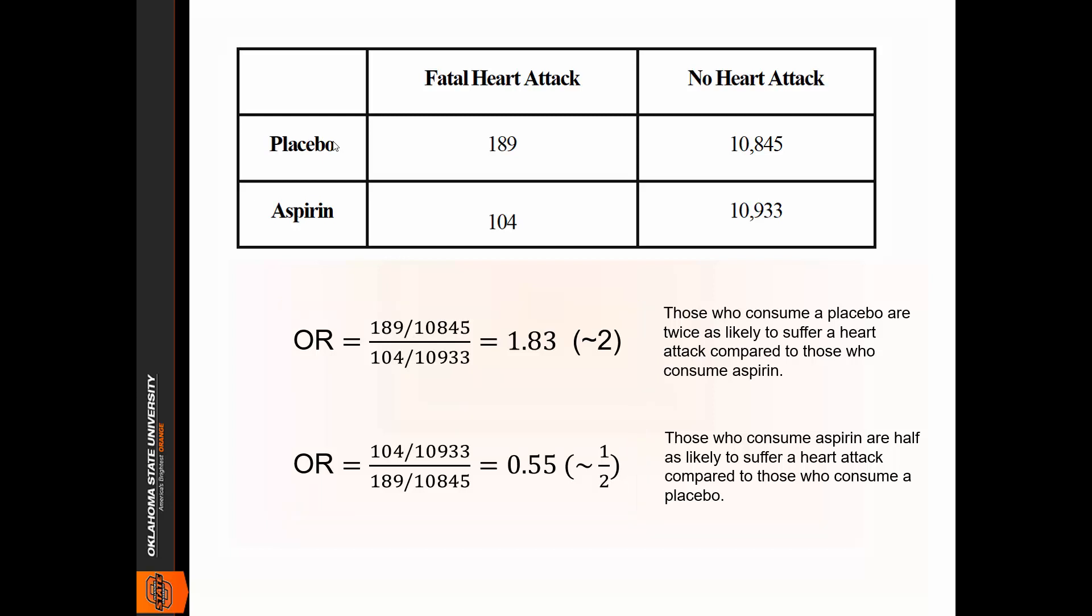One thing to keep in mind is that most researchers will set up the odds ratio according to the treatment. So the treatment here is comprised of the rows - we have placebo and aspirin. So instead of working with the columns, we'll work with the rows here. There are two ways to do so.